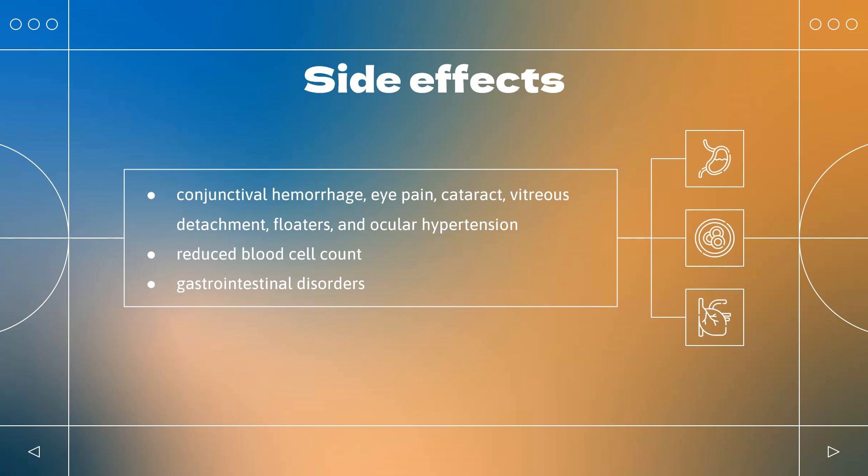Aflibercept (Zaltrap) has adverse effects typical of anti-cancer drugs, such as reduced blood cell count including leukopenia, neutropenia, and thrombocytopenia, gastrointestinal disorders like diarrhea and abdominal pain, and fatigue. Another common effect is hypertension, or increased blood pressure.